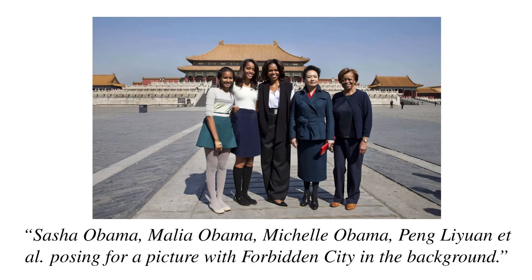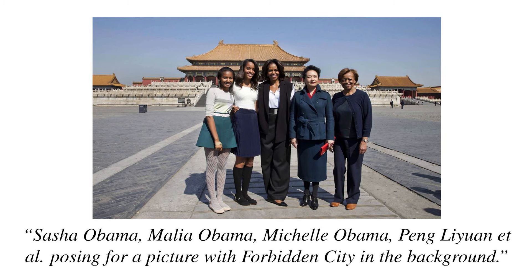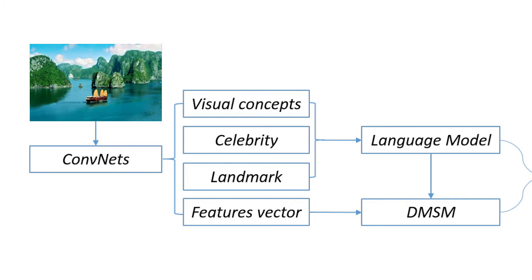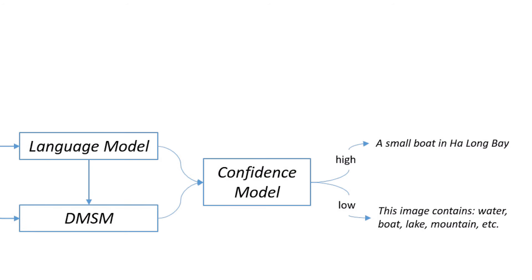In computer vision, we use the deep residual network — a very deep network — to extract different visual concepts and also extract entity information such as people's names and landmarks. We then feed that information to a language model, which is also a deep neural network, to generate candidate captions.